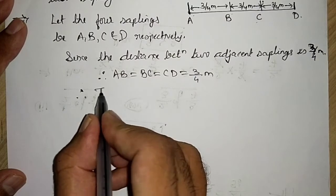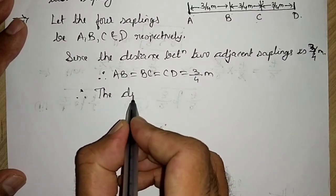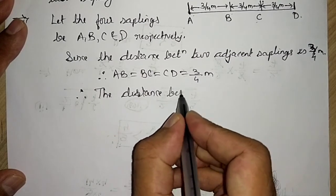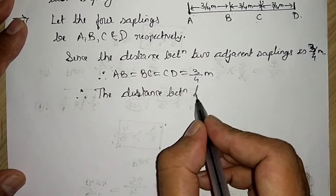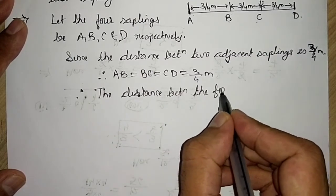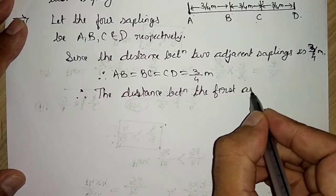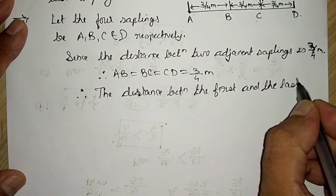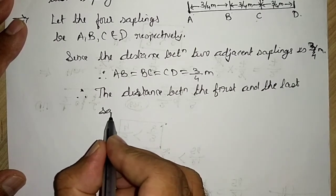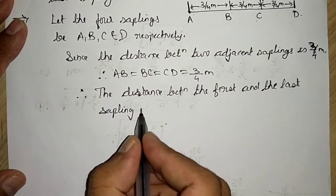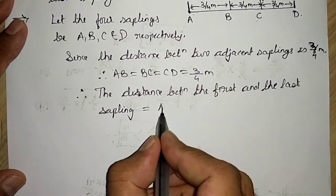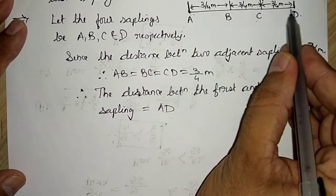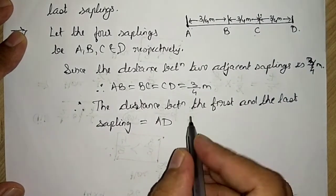Therefore, the distance between the first and the last sapling is equal to AD. This much distance. And AD is made up of what?